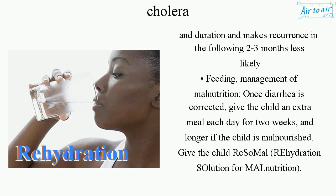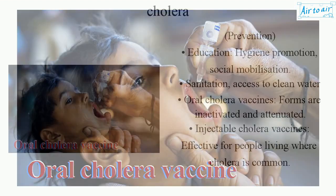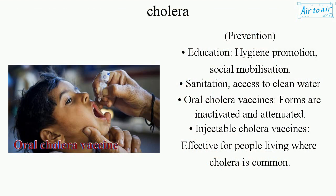Give the child ReSoMal (rehydration solution for malnutrition). Prevention includes education, hygiene promotion, social mobilization, sanitation, and access to clean water. Oral cholera vaccines come in inactivated and attenuated forms. Injectable cholera vaccines are effective for people living where cholera is common.